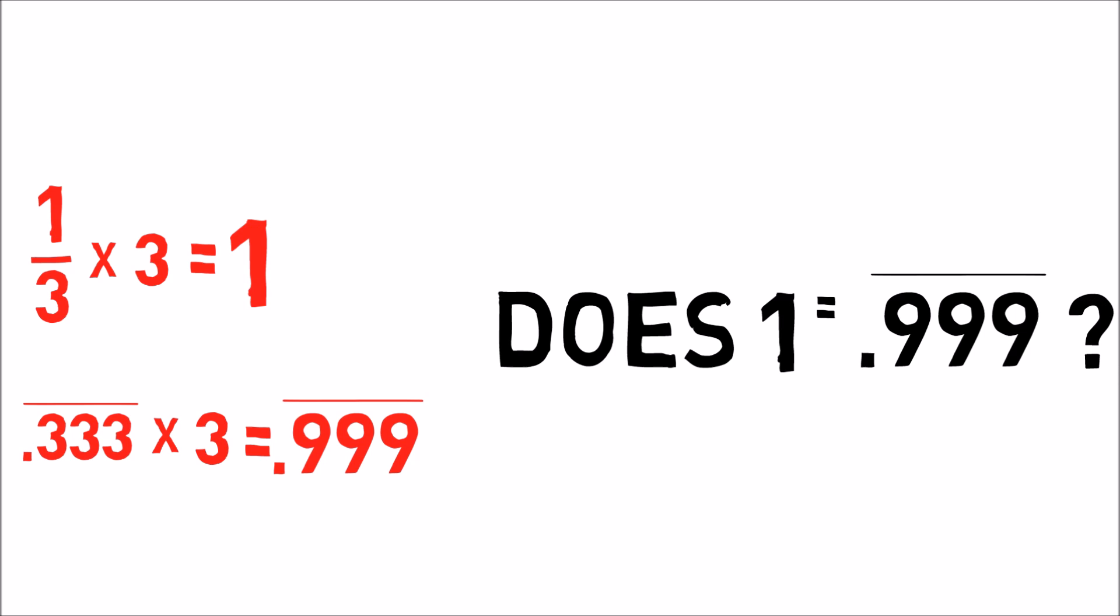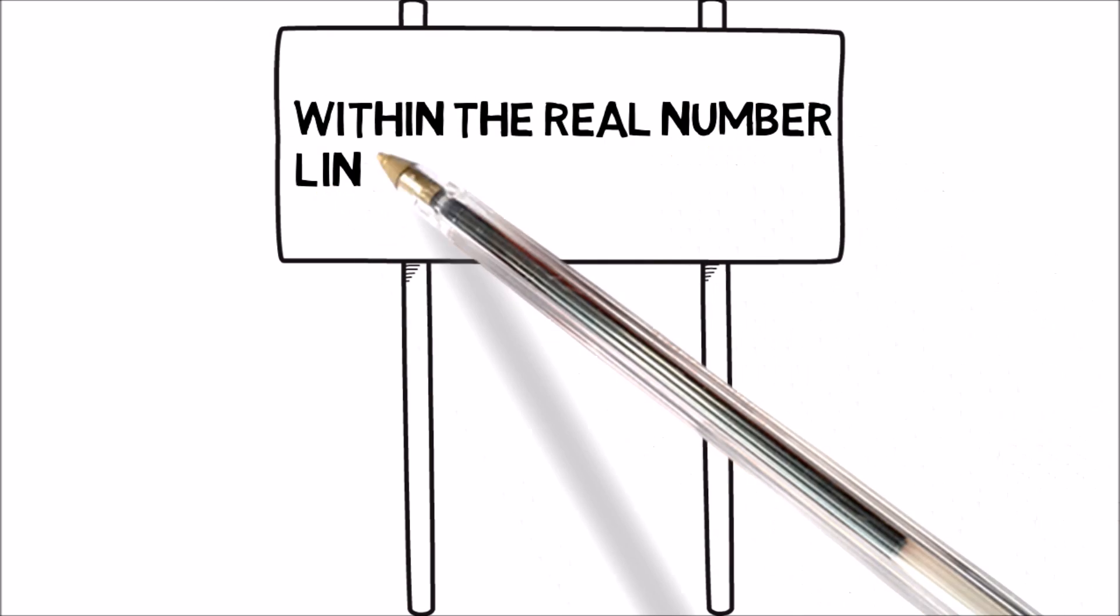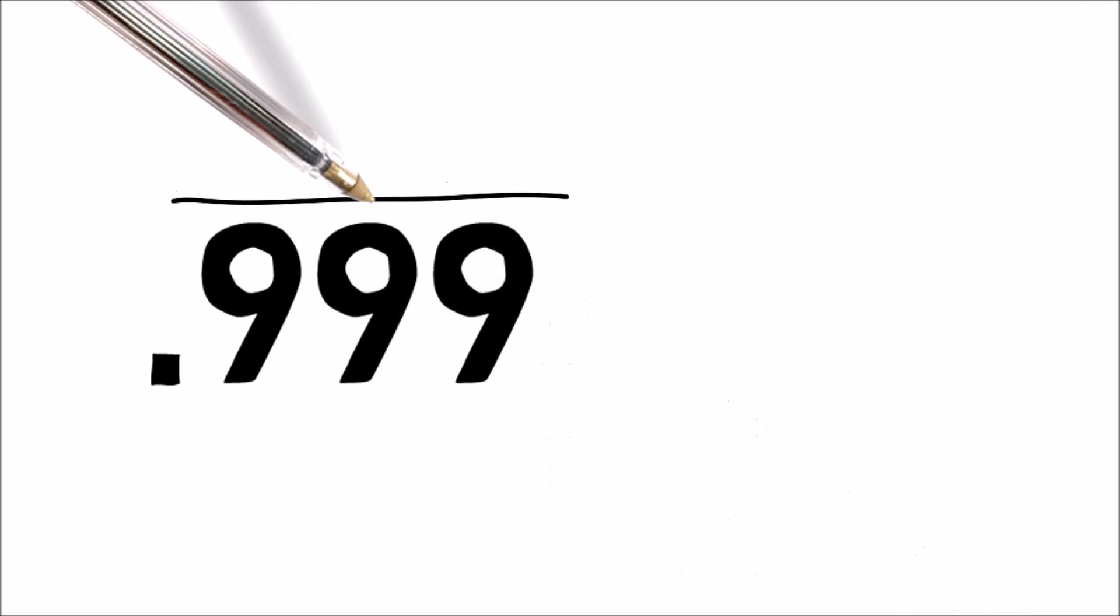They are extremely close, 0.999 forever repeating and 1, infinitely so. But are they the same? Within the real number line, these two numbers are equal. But they can't be equal! They are two different numbers!